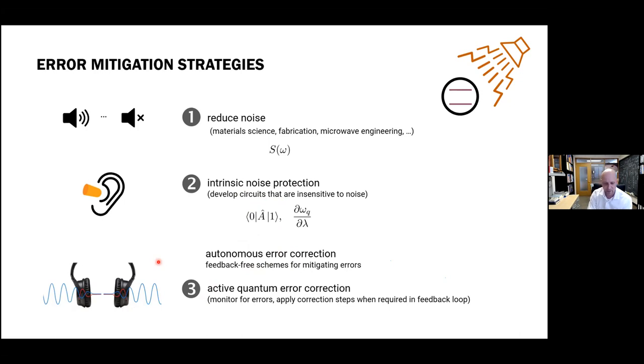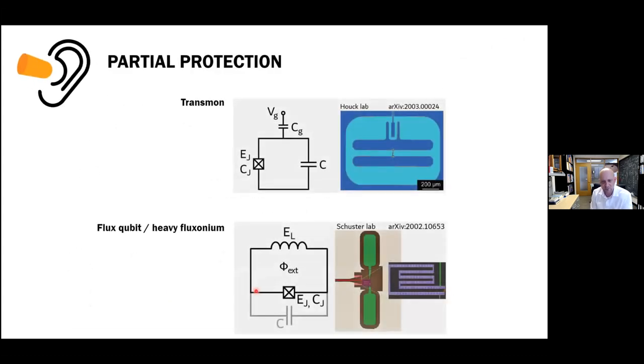And then I'll skip over autonomous error correction, which is sort of in between, but then at the very end over here is perhaps what we ultimately will need, which is active quantum error correction, which in this little caricature is like your noise cancelling headphone, right? There's a feedback loop and you actually have to actively monitor for errors in a clever way and then without learning what the system is actually doing in detail and then apply correction steps whenever required. And so as you already anticipate, my talk is going to focus on this middle point here, intrinsic noise protection. And you all know noise protection in one form or another. In fact, the kind of noise protection that I'm interested in, you've seen most likely in different qubits.